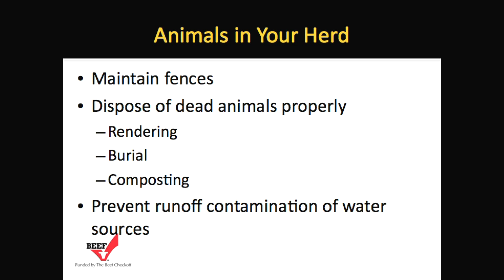Maintain perimeter fences to prevent mixing your cattle with your neighbor's cattle. Disposing of dead animals properly can help control disease, and there may be local and state regulations that need to be followed. Animals could be disposed of by rendering, burial, or composting — check with local health authorities to find out what is most appropriate for your area. When disposing of dead animals, make sure to prevent runoff contamination into water resources.